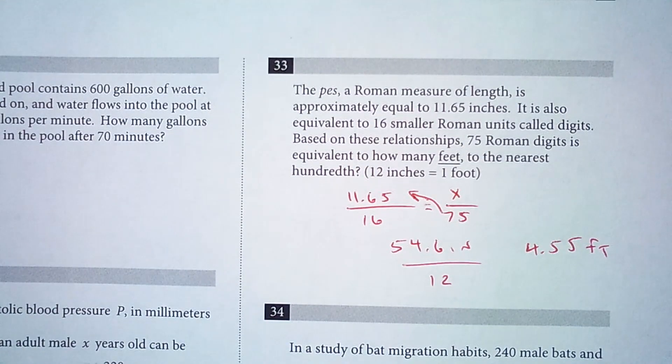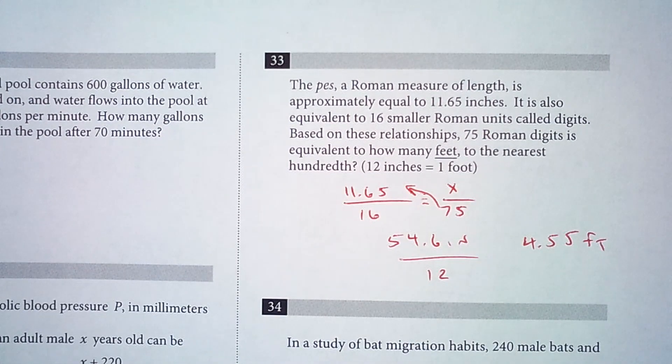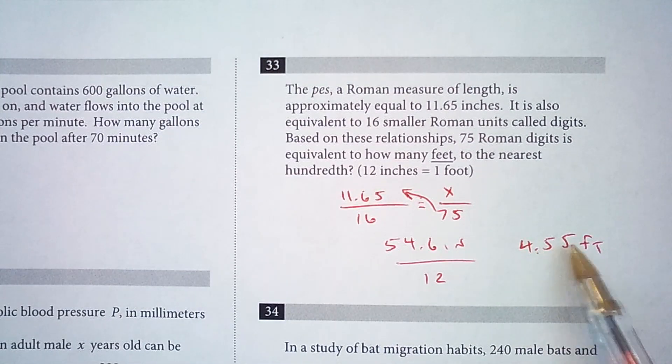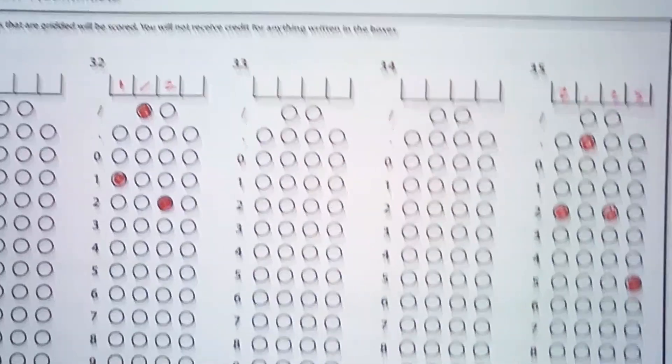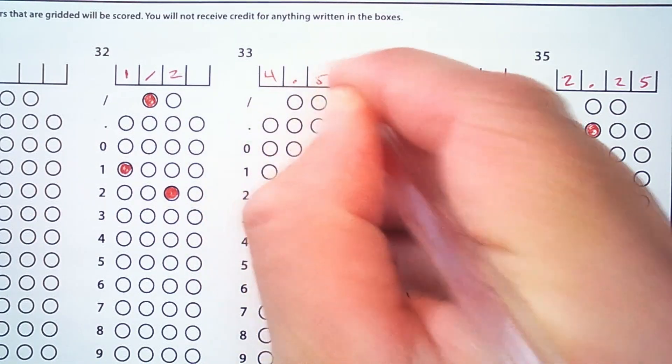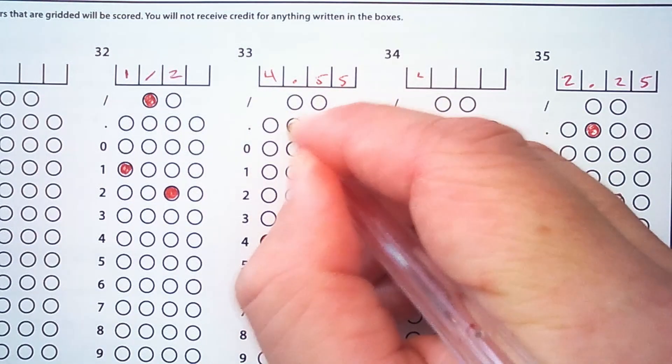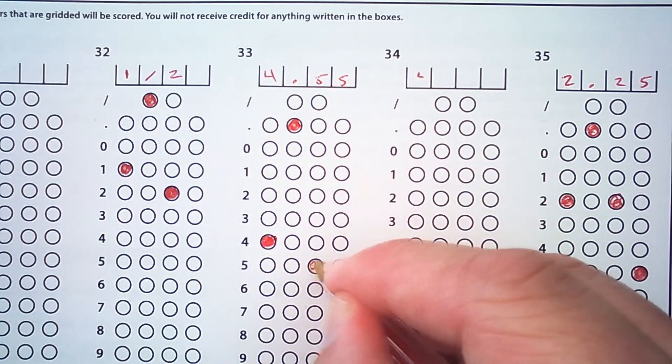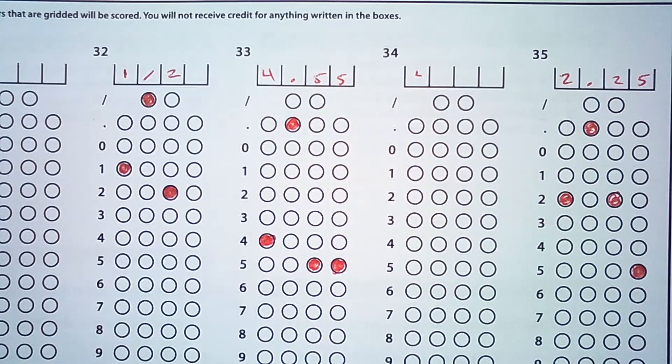Okay, so there's more decimal places, but it does say to the nearest hundredth and we can only fit four characters in our grid. 4.55 will be four characters. So for number 33 in our grid, we're putting 4.55.